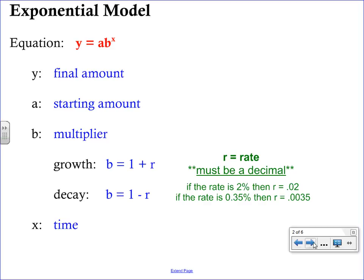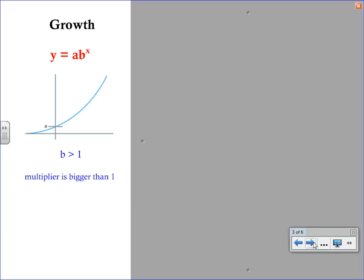This equation corresponds to a graph. We've just finished up looking at graphs of exponential functions, and there are two types: growth and decay. First I'd like you to examine the growth graph. The equation is the same as the one we just talked about. What I want you to notice is that you will know you have growth if your b is bigger than one. In other words, the multiplier is a number that is larger than one, and remember that multiplier is found by doing 1 plus r.